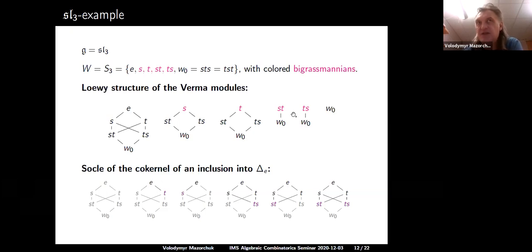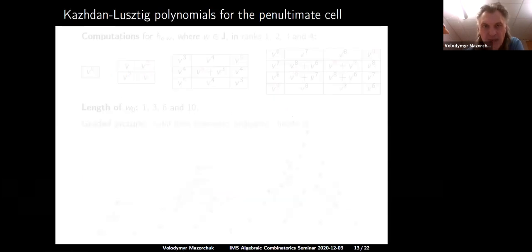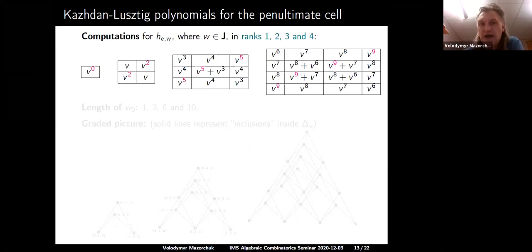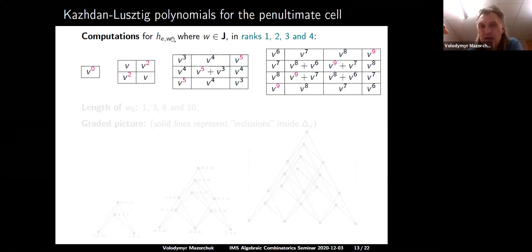To prepare the main result, we need to look at Kazhdan-Lusztig polynomials for the penultimate cell — specifically between the identity element and elements in the penultimate cell, as these describe multiplicities of simple subquotients of the dominant Verma module. Computing these polynomials for small ranks (rank 1 through 4) reveals a pattern. The maximal degrees that appear are 0, 2, 5, 9 respectively, corresponding to lengths of w₀ being 1, 3, 6, 10.